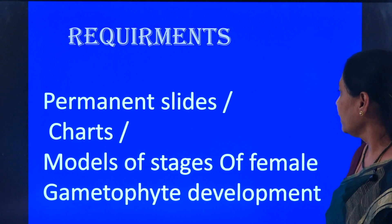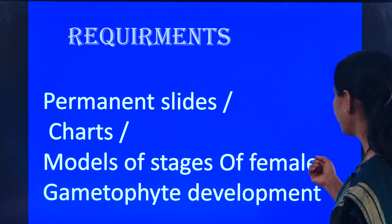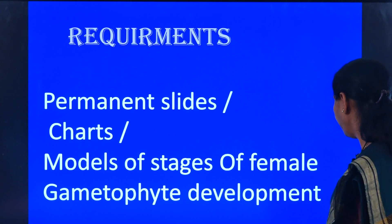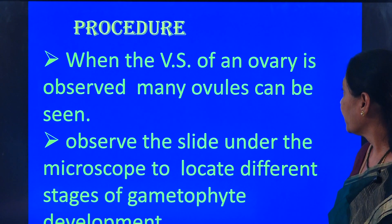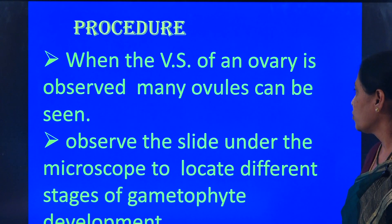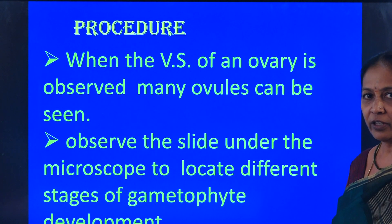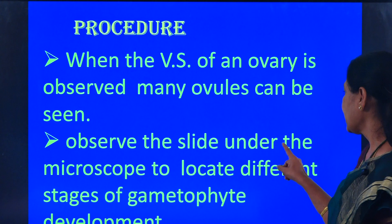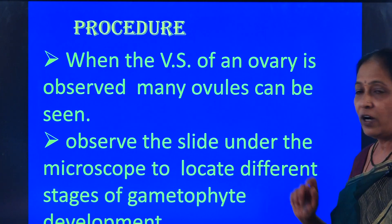This can be studied by using either permanent slides, charts, or the model of stages of female gametophyte development. We are going to follow the procedure here. When the vertical section of an ovary is observed, many ovules can be seen. Observe the slide under the microscope to locate the different stages of gametophyte development.